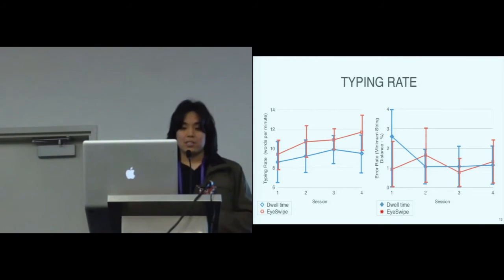The graph on the right shows the error rate as measured by the minimum string distance rate. And the low values indicate that the participants were careful typing with both interfaces.